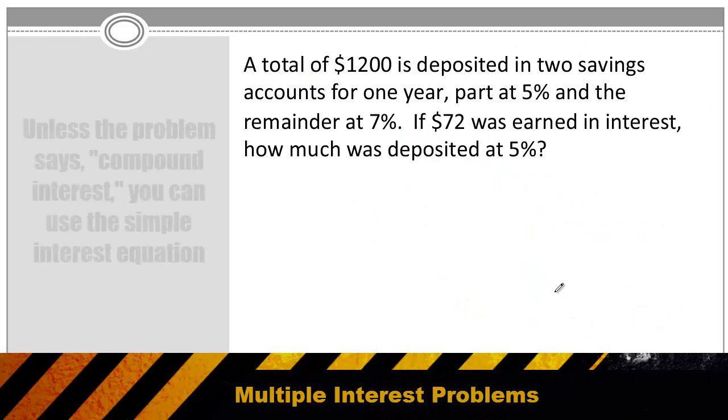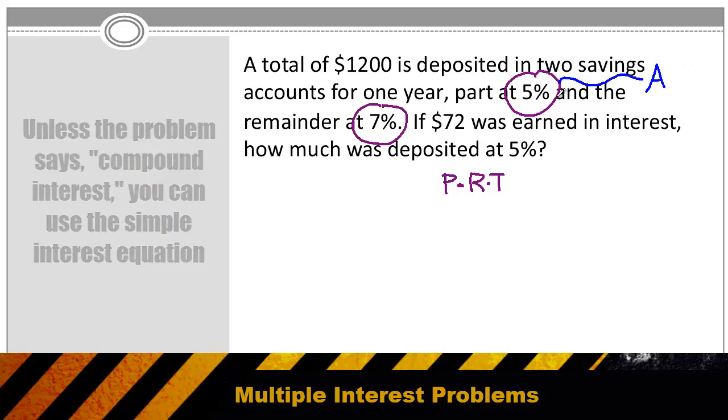Here's a problem where I have information about two separate accounts earning two different kinds of interest. If they don't specify that it's compound interest, we can assume we're using simple interest. So our equation is the interest we earn is going to be equal to the principal invested, times the interest rate, times the time. In this equation, we have one account that earns 5% and one account that earns 7%. I'll call the amount invested at 5%, I'll call that account A, and the amount at 7%, we'll call that B.